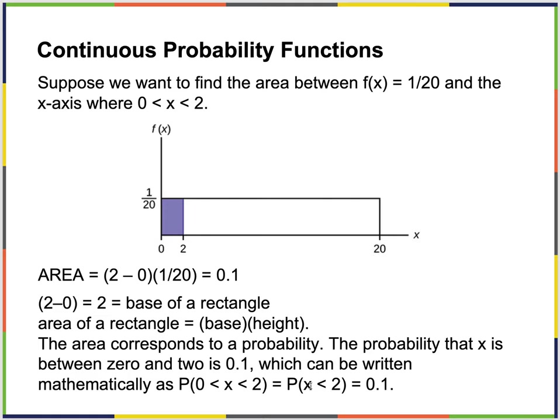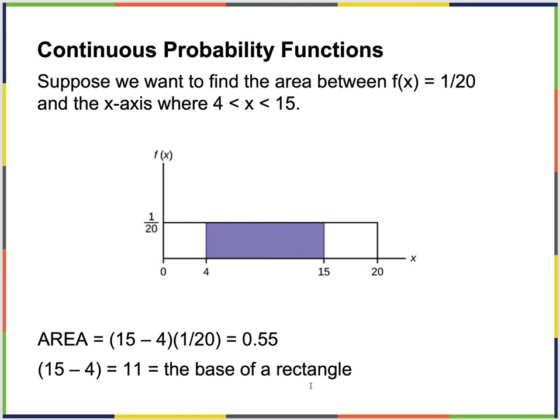Since you know the domain is 0 to 20, you could say x is less than 2. Between 4 and 15: 15 minus 4 is 11 — that's the base. That becomes 11 times 1/20, which equals 11/20. You could also express this in decimal form.